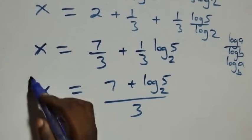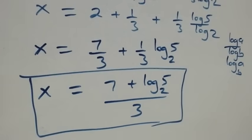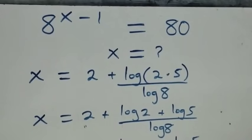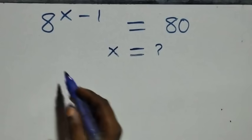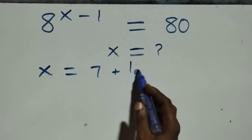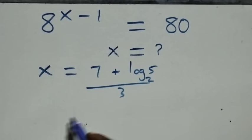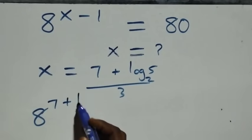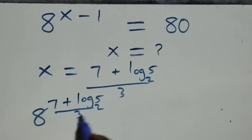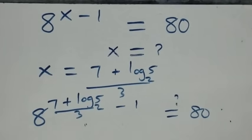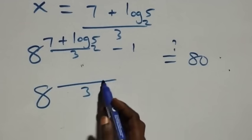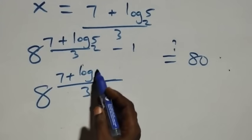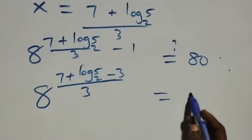So we have the value of x as x equals to 7 plus log base 2 of 5, all over 3. Now let's check: does this satisfy the given problem? We substitute the value of x, which is 7 plus log base 2 of 5, all over 3, into the original equation. We get 8 raised to power the quantity 7 plus log base 2 of 5 over 3, minus 1, equals 80. Bringing the minus 1 over a common denominator of 3: we have 7 plus log base 2 of 5 minus 3, over 3, equals 80.